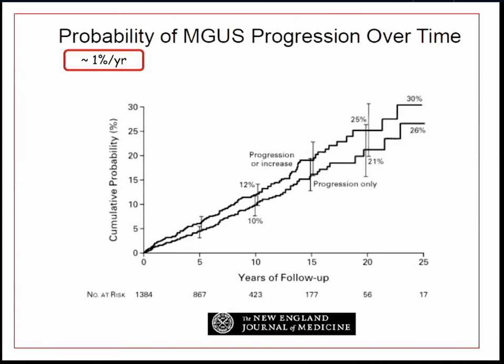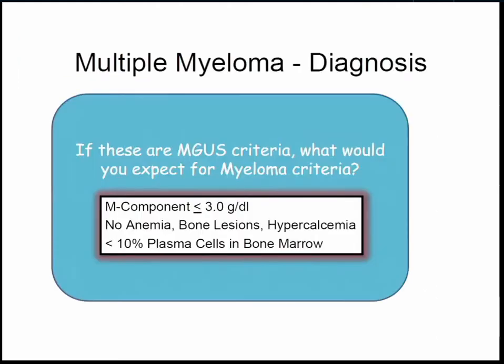Just to let you know, MGUS patients ask: what's going to happen to me? One percent per year go on to develop a myeloproliferative disorder — they're not going to ask you that on the boards.